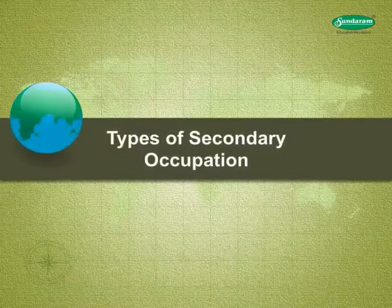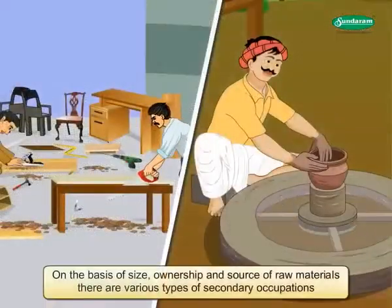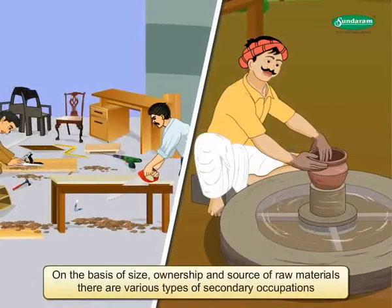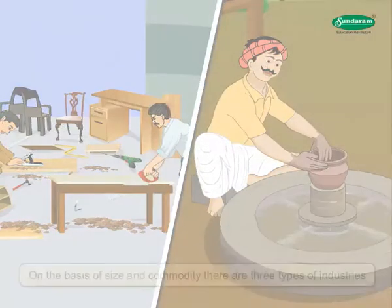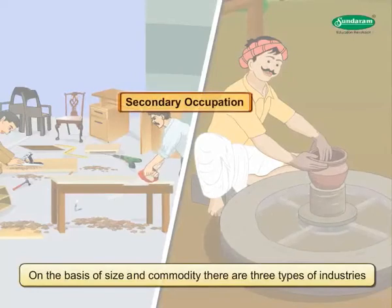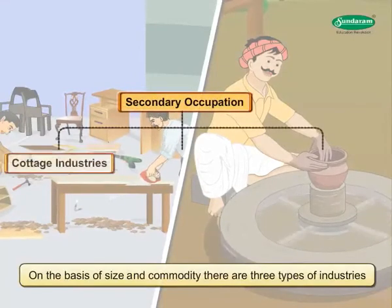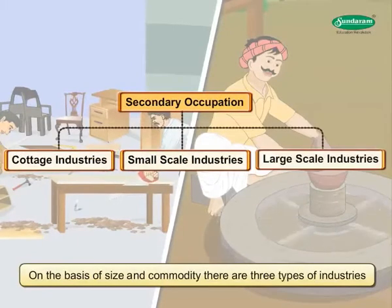Types of Secondary Occupation. On the basis of size, ownership and source of raw materials, there are various types of secondary occupations. On the basis of size and commodity, there are three types of industries: cottage industries, small-scale industry and large-scale industry.